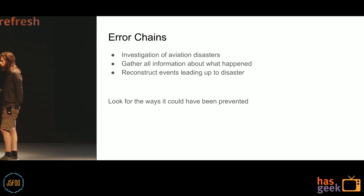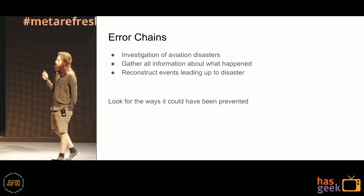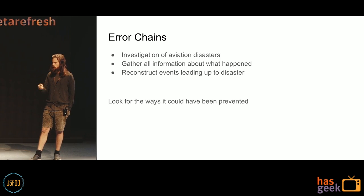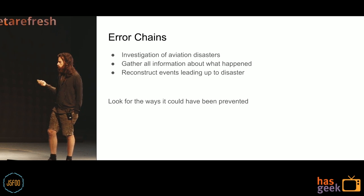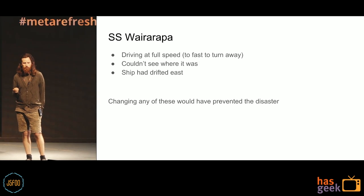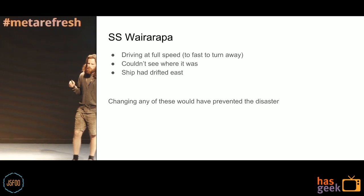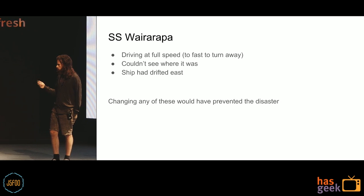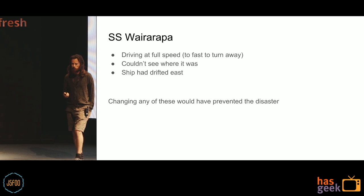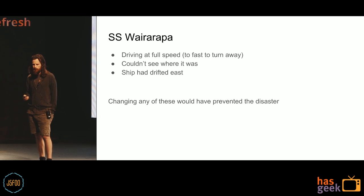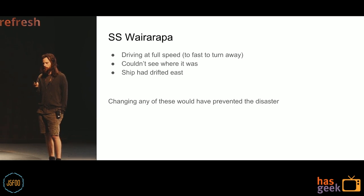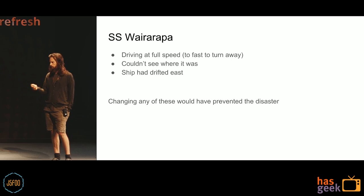This is a very important concept: error chains. Whenever a plane crashes, investigators look at everything that led up to it — all the things that came together to make it happen. That's the error chain. Then you look for ways the disaster could have been prevented. The SSY Wairarapa was driving at full speed, couldn't see where it was, and the ship had drifted east. If you changed any one of those factors, it wouldn't have happened. This disaster was in the 1890s and GPS hadn't been invented yet, but they could have slowed down or waited until the fog went away.